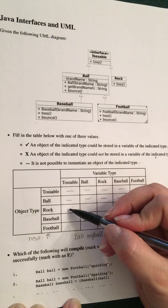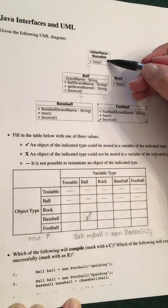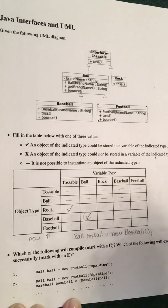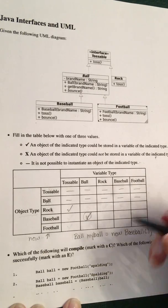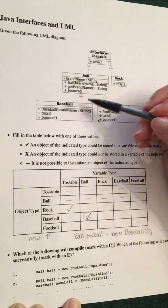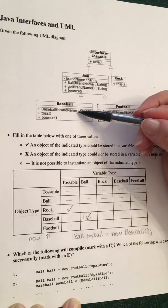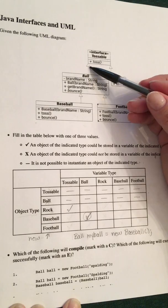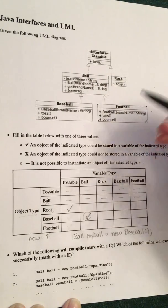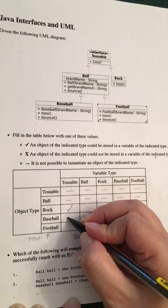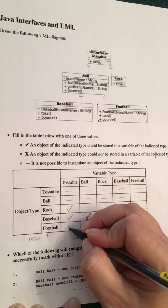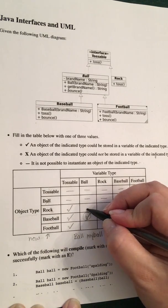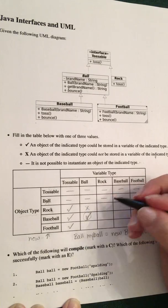Can I say 'new Rock' and put it in a tossable variable? Yes, it implements the interface tossable. Now here it might not be quite as obvious: Baseball does implement toss because it extends Ball, which implements tossable — and the same with Football. So I can say 'new Baseball' and put it into tossable, and 'new Football' put it into tossable. Can I say 'new Rock' and put it into a Ball variable? No — they don't have that relationship.